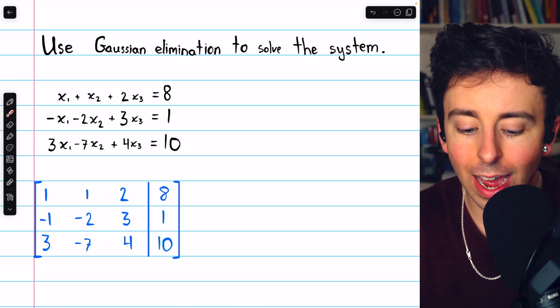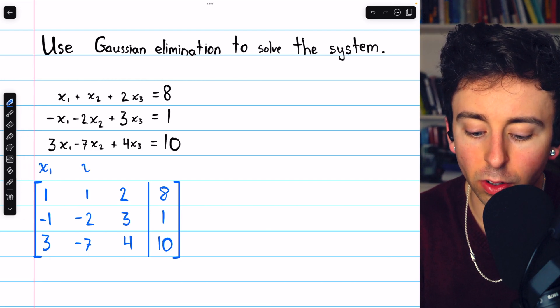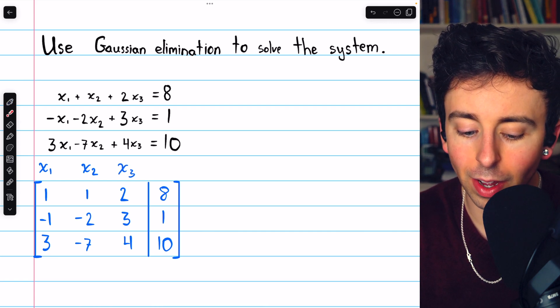On the left we have the coefficients of our three variables. The first column consists of the coefficients of x1, then the coefficients of x2, and then the coefficients of x3.